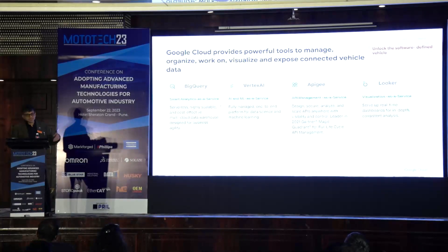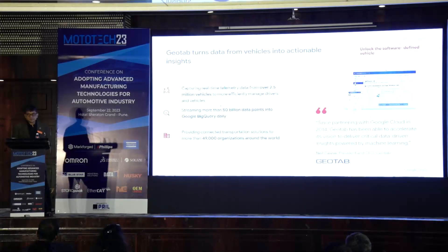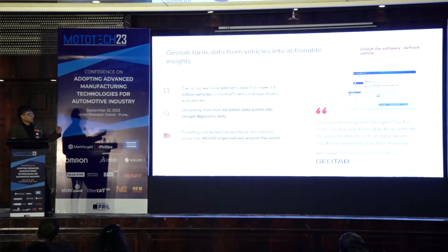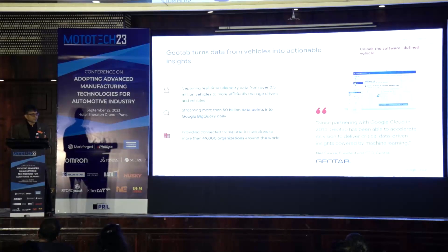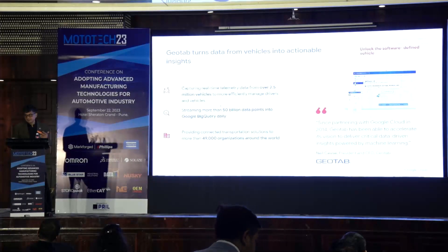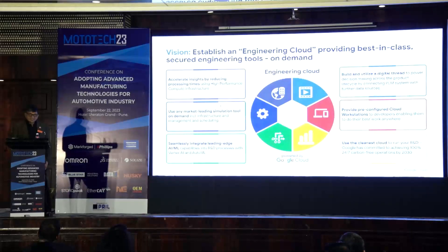Apigee is a tool that helps interface all Google technologies with external systems, and Looker provides visualization services. Our partner Geotab takes real-time telemetry data from over 2.5 million vehicles and streams 50 billion data points to optimize fleets around the world — contributing directly to sustainability. BigQuery is a platform that scales seamlessly from 10 bytes to exabytes, so ingesting 50 billion data points from just one company is well within its capability.